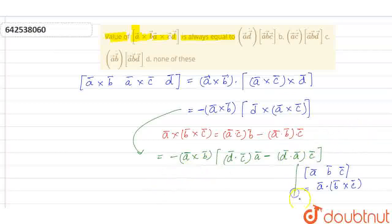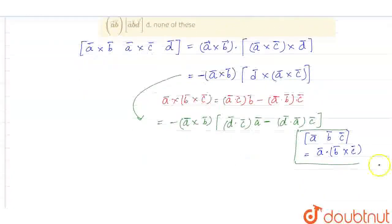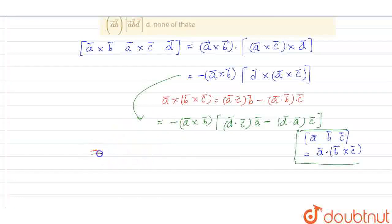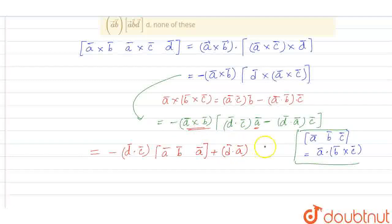Now, with this logic, again, this can be written as minus times D dot C, D vector dot C vector common, A cross B. When it is multiplied with dot product with A, it becomes box of A cross A, box of A, B, A. And, this minus minus becomes plus. Inside, we will get D vector dot A vector, A, B, C.